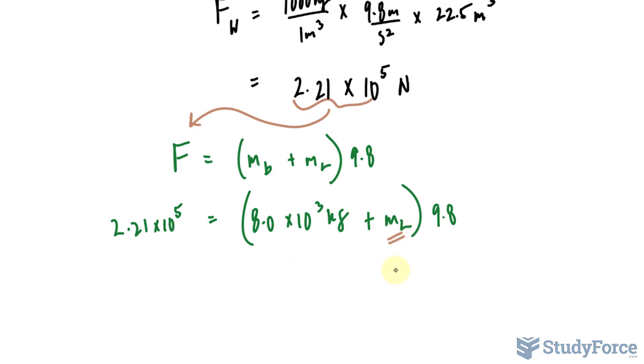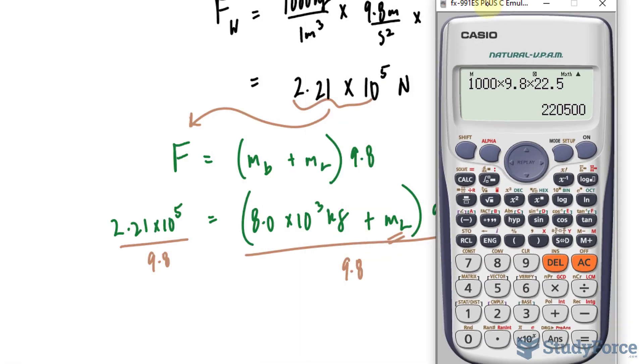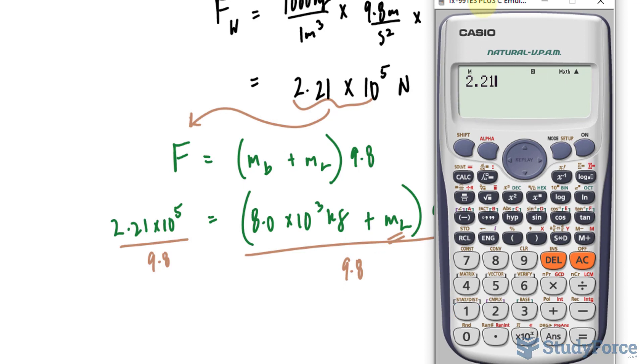We have to solve for m sub l, and it's not hard to do, it's simple algebra here. You divide both sides by 9.8, and I should be including the units here, but I know that mass will be in kilograms, so there's really no point. So 2.21 × 10⁵ divided by 9.8,